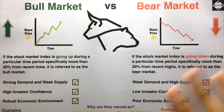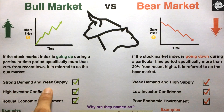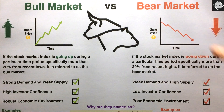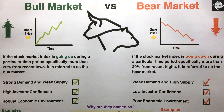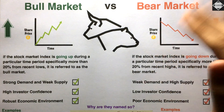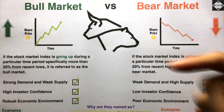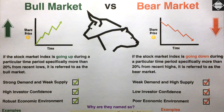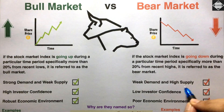Bear market is exactly opposite. The first characteristic is weak demand and high supply. Prices are continuously falling and the entire market sentiment is negative. Because sentiment is negative, everyone wants to sell shares and get out of the market — take their cash and run. So high supply means everyone wants to sell.